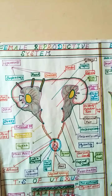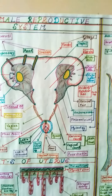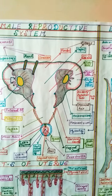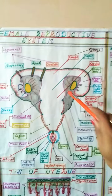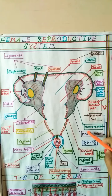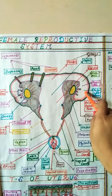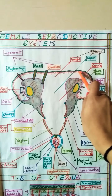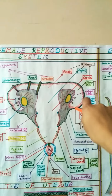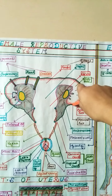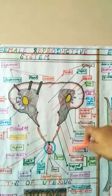The uterus is a very important part of the female reproductive system and is also called the womb or hystera. Another important structure is the mesosalpinx, which is a double fold of peritoneum that helps hold the fallopian tube in its position.